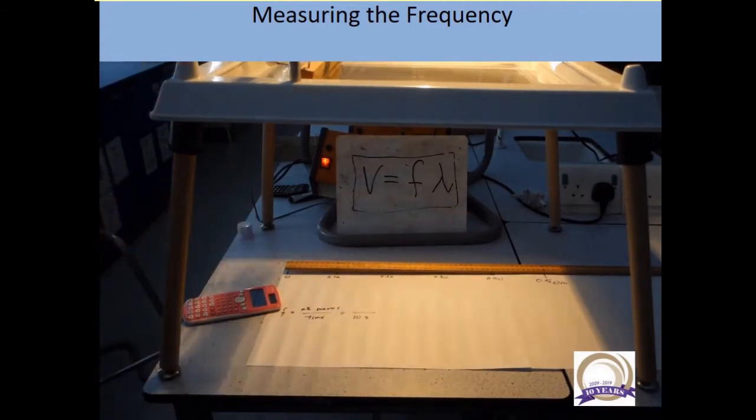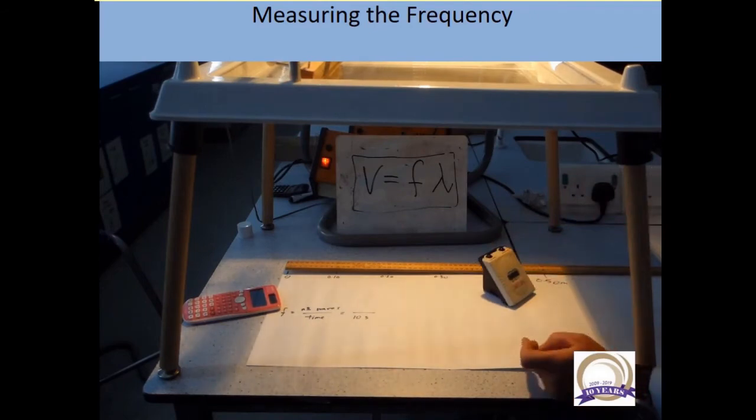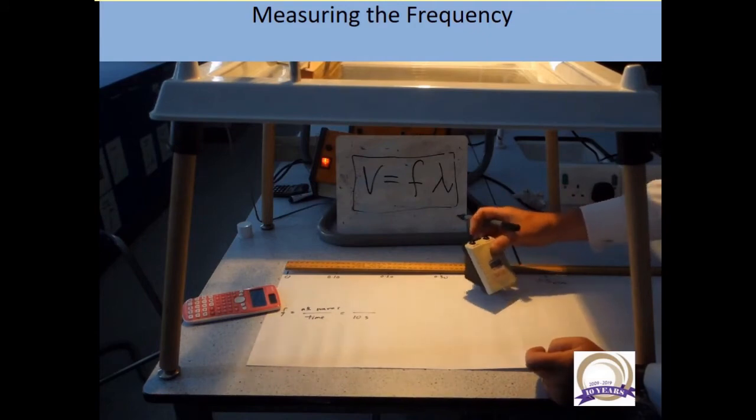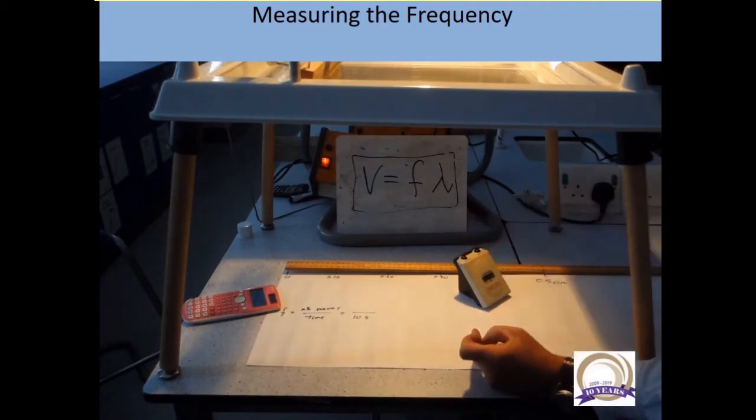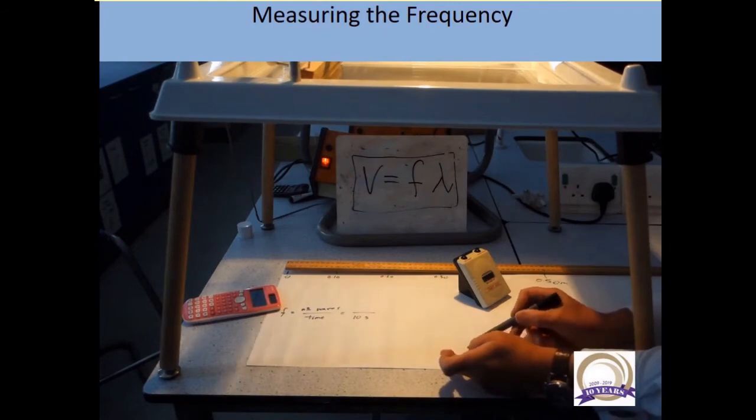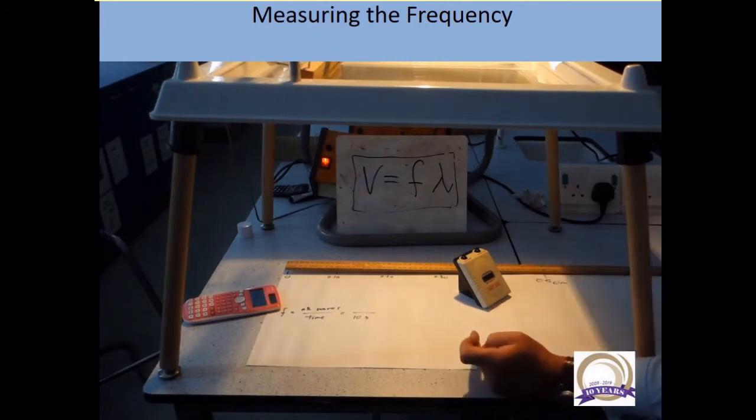So all I'm going to do is time 10 and count at the same time, which is easier said than done because they're not all that visible. I'm going to pick a point that is a bit more visible. It fades a bit down here, so I'm going to pick this point here where I'm going to start counting.